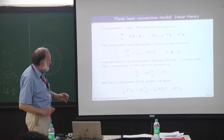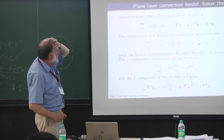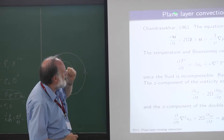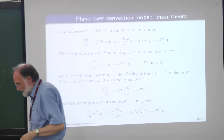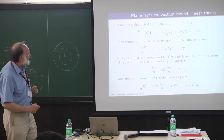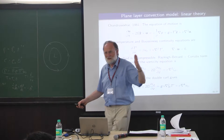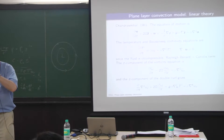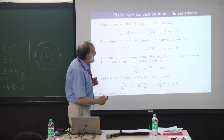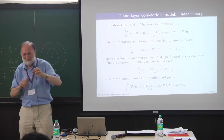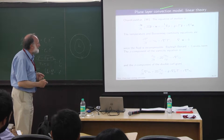That gives the flavour of the basics of rotating convection. Now let's look at the theory. The best book for plane-layer models — rotating, non-rotating, or with a magnetic field — is Chandrasekhar's classic 1961 text, 'Hydrodynamic and Hydromagnetic Stability.' It flows completely logically, no steps are omitted, everything is explained. It's something to do with having a very logical mind — perhaps that's how you win Nobel Prizes.